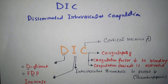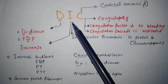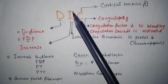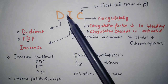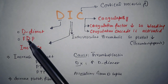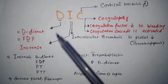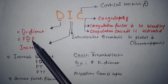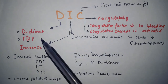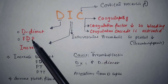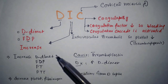DIC — disseminated intravascular coagulation. How do we remember that? Just look at the word DIC and you will remember everything. D is for D-dimer, D is for FDP (fibrinogen degradation product), and I is for increase. So in DIC, there is an increase in D-dimer and an increase in FDP.